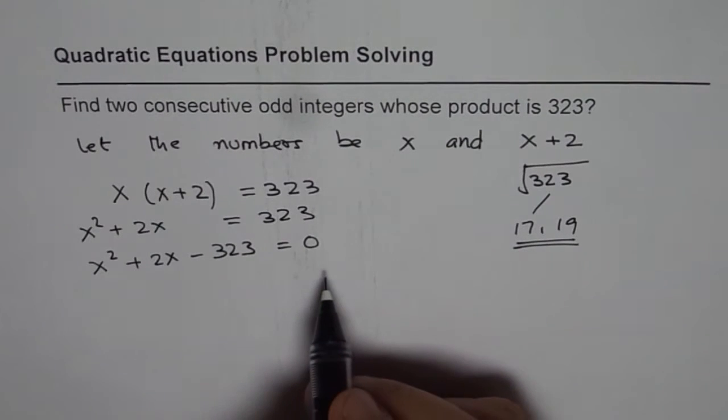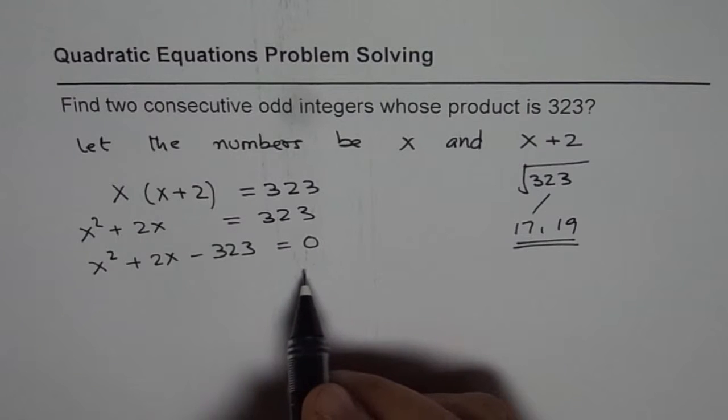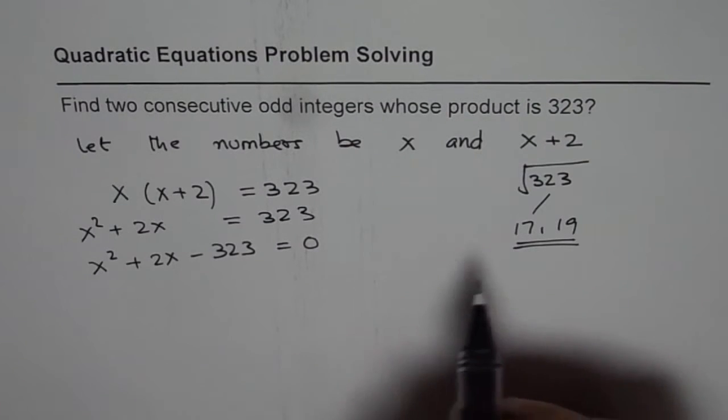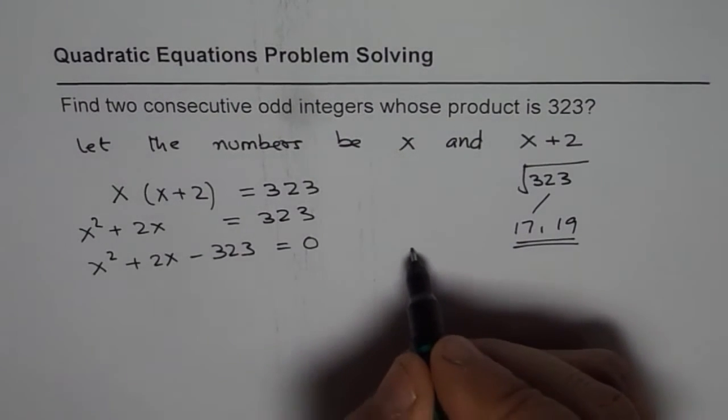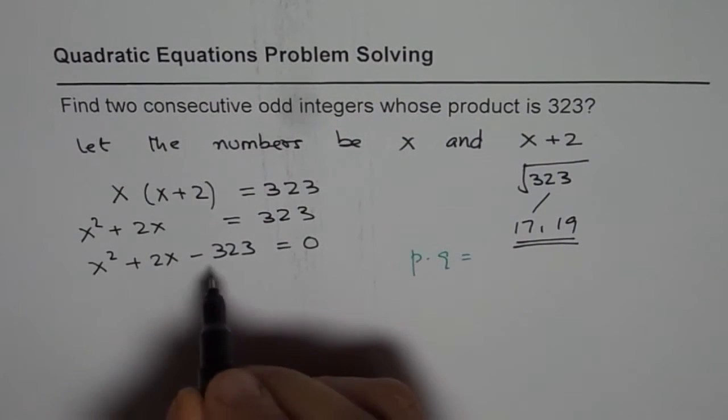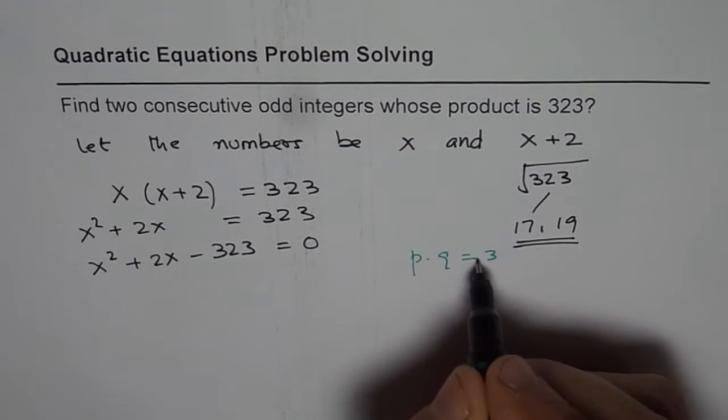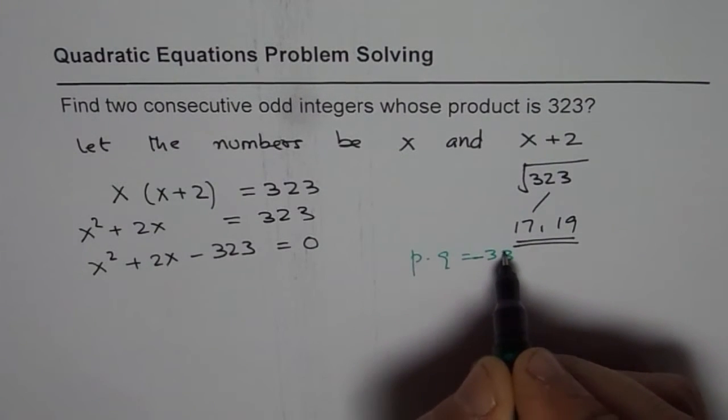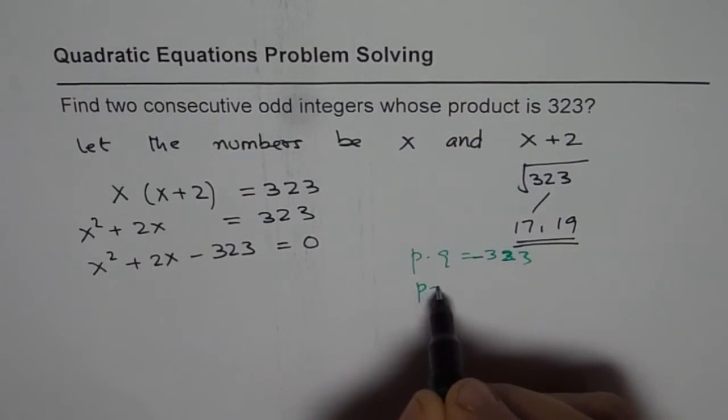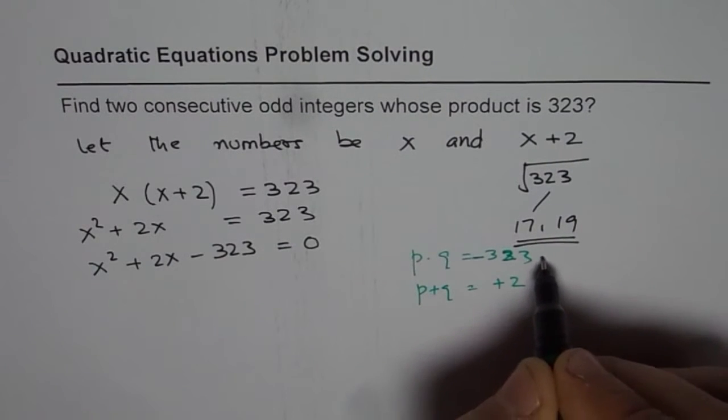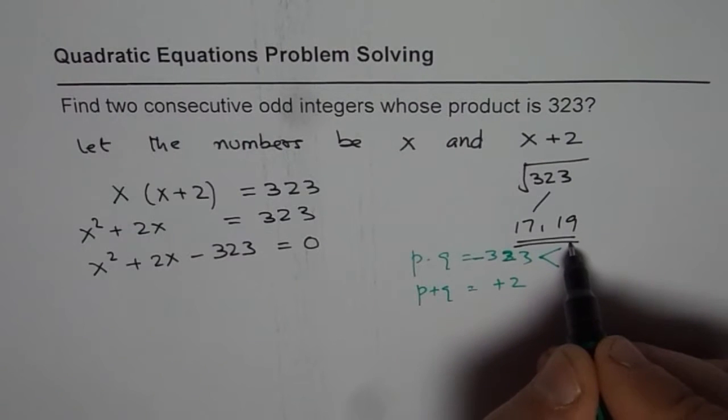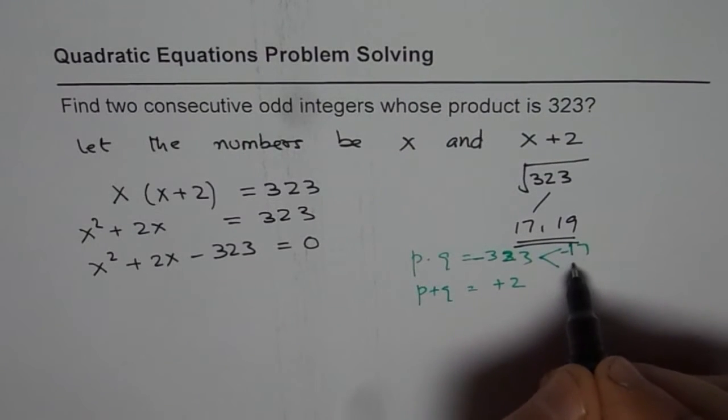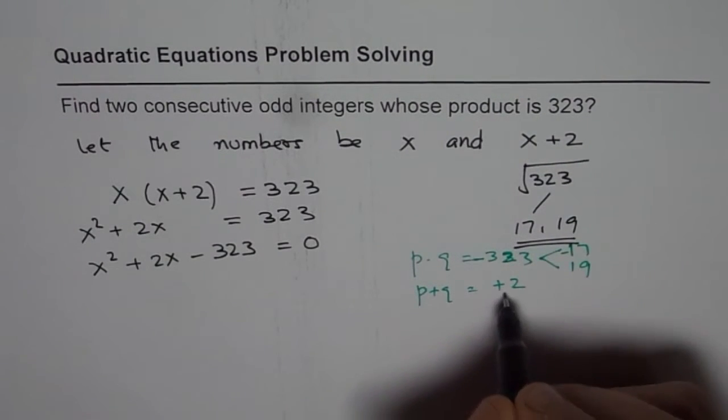Now you can apply the quadratic formula, or you can factor them. So we found that 17 and 19 are two numbers whose product, that is to say, we found two numbers whose product should be minus 323 and whose sum should be plus 2. So the two numbers which work for us are 17 with a minus sign and 19 with a plus sign, that gives you plus 2.